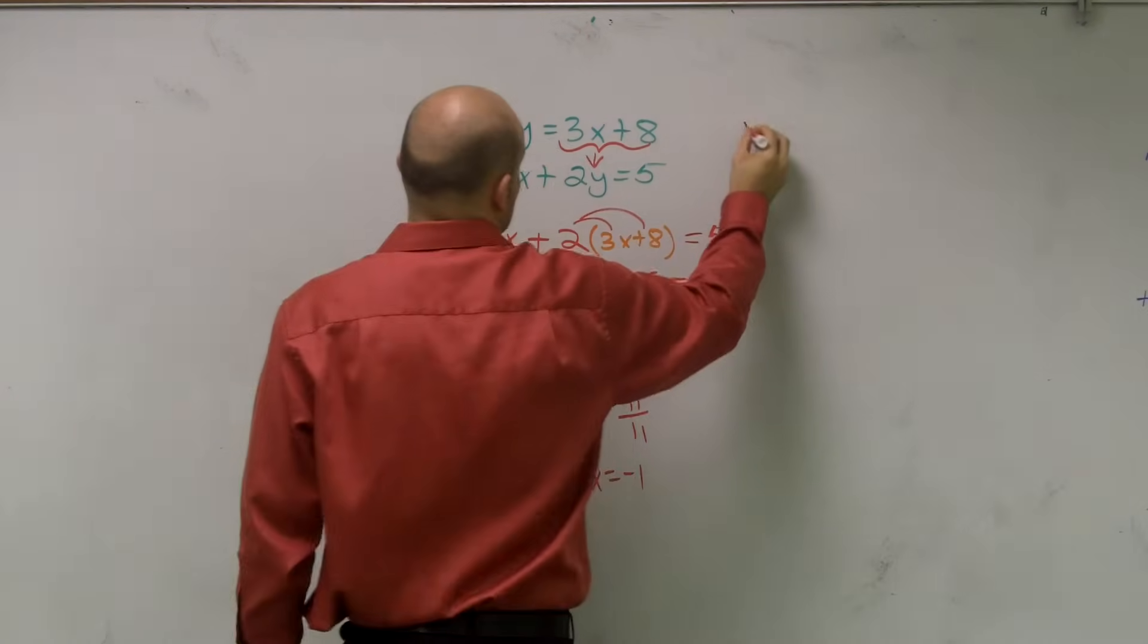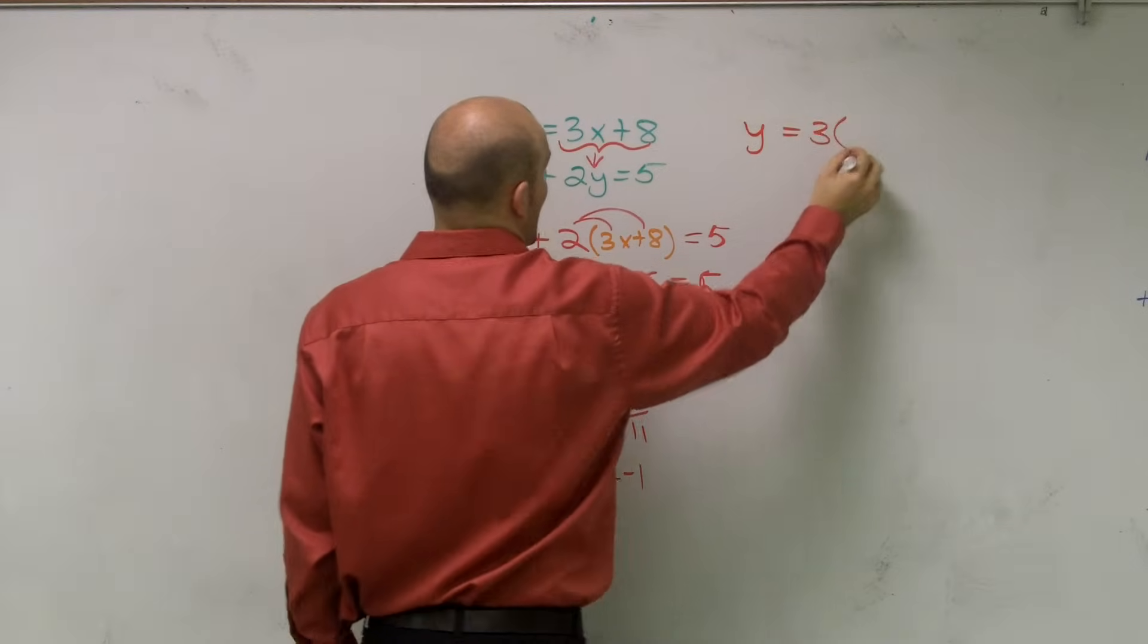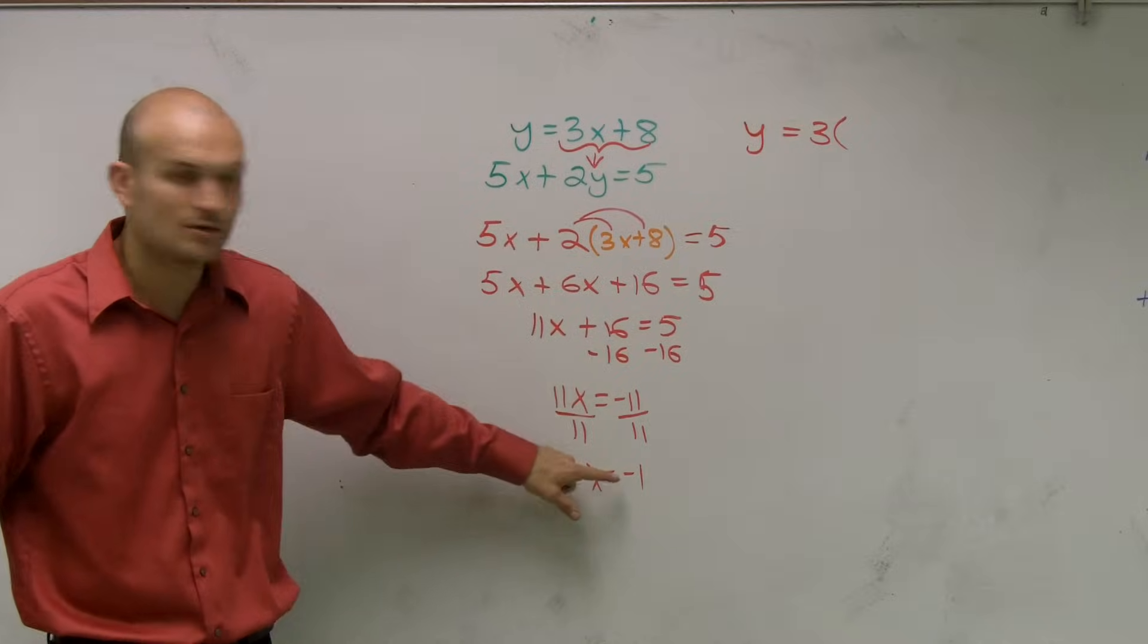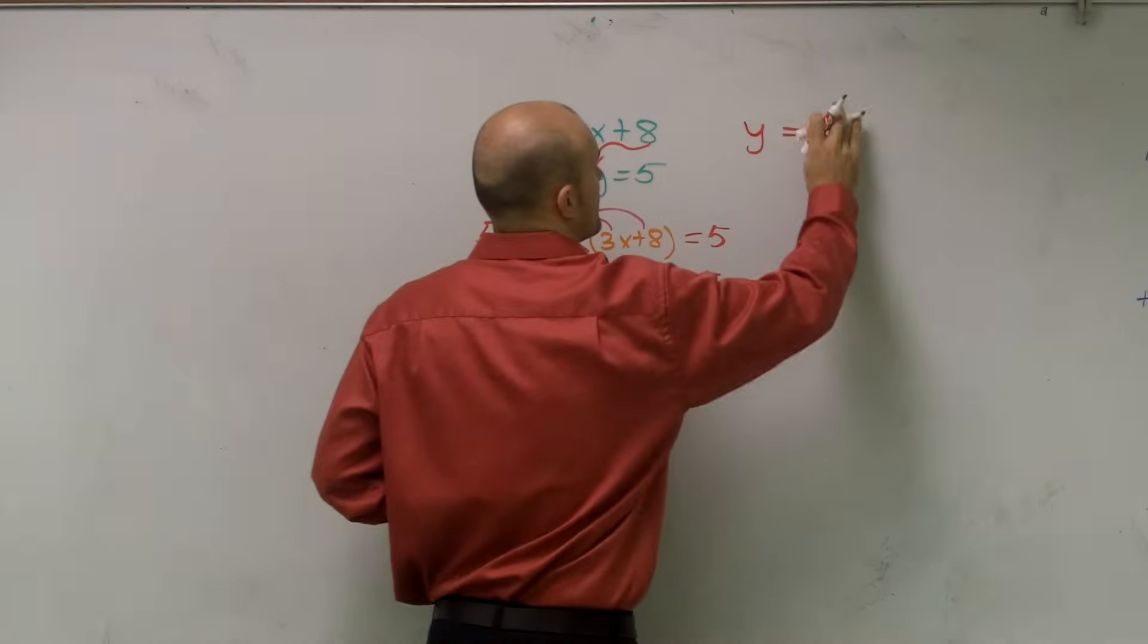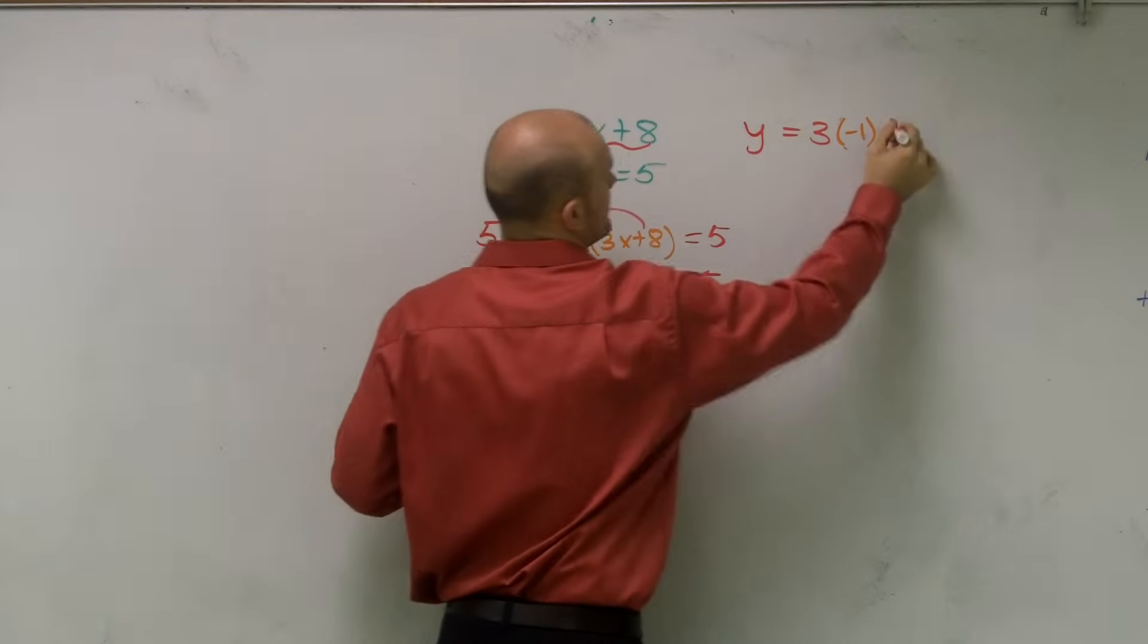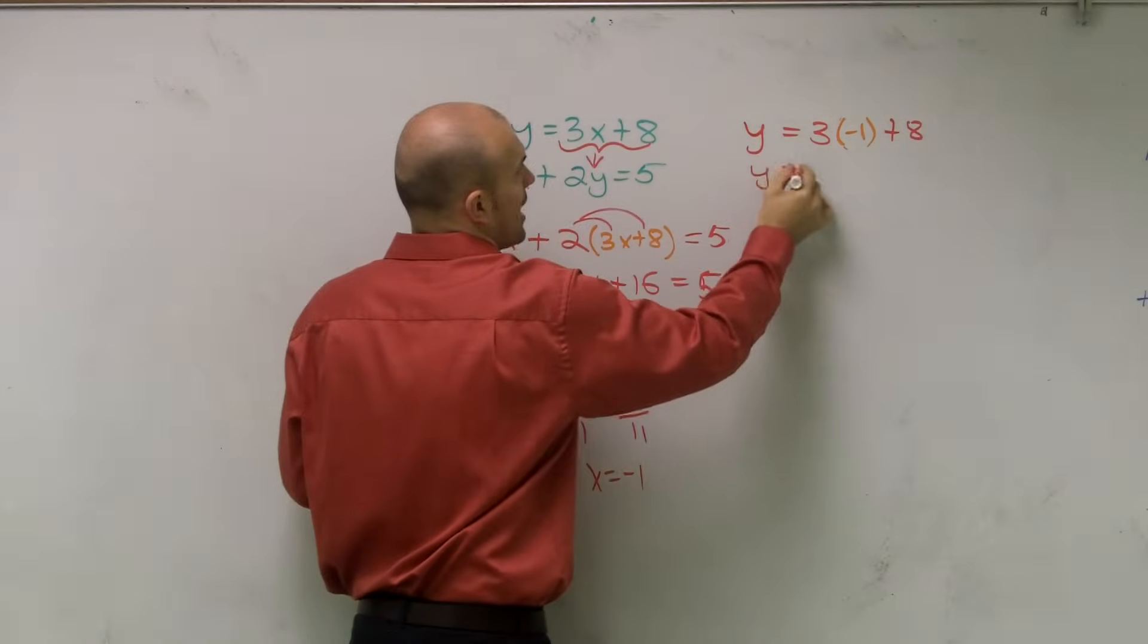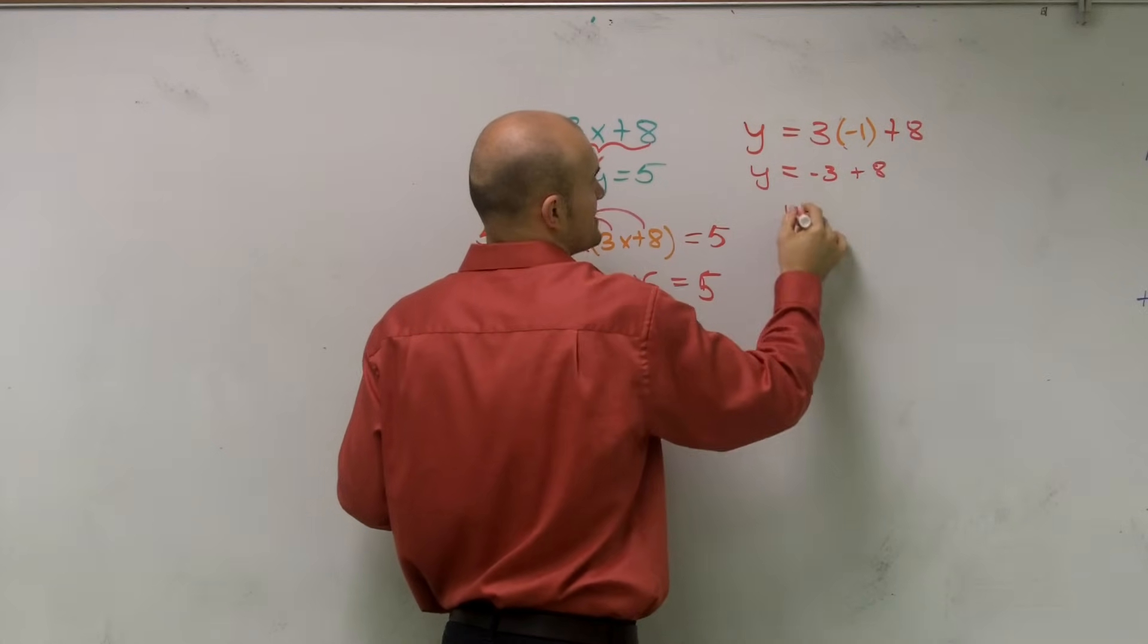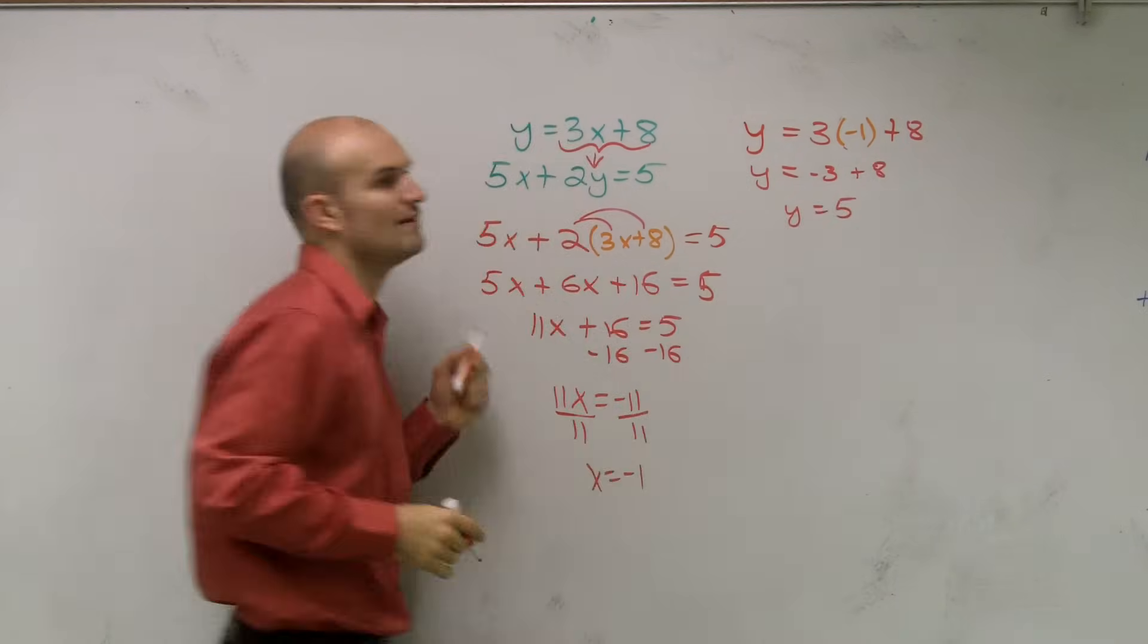So let's do it that way. So I have y equals 3 times x, because now x equals negative 1 plus 8. So therefore y equals 3 times negative 1 is negative 3 plus 8. y equals 5.